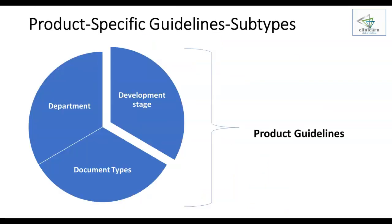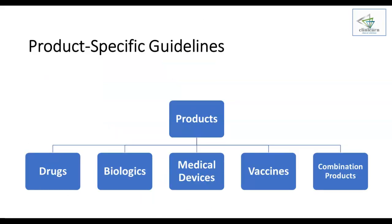For example, the product-specific guidelines can be related to different development stages, can be issued by a specific department in the health authority, and there can be multiple document types. Medicinal products can be of different types: drugs, biologics, medical devices, vaccines, and combinations of any of these products.